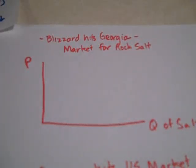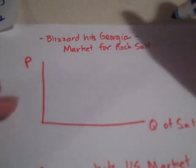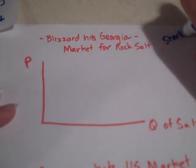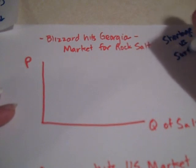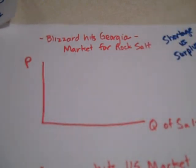Now we're going to look at a market graph, just really looking at and interpreting what some of this means after you have a shift, particularly looking at the concepts of shortage versus a surplus. When do you have too little of something, and how can you know, and when do you have too much of something?